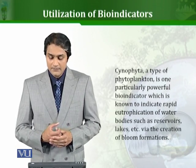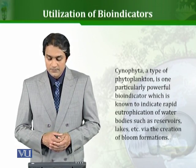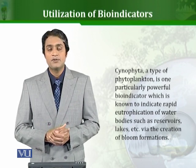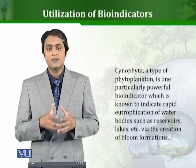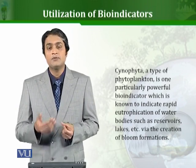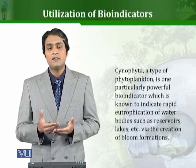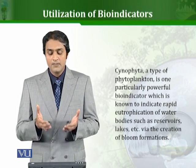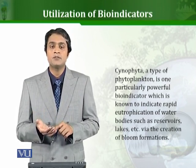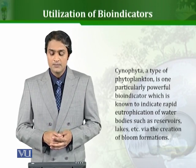For example, Cyanophyta, a type of phytoplankton, is one particularly powerful bio-indicator known to indicate rapid eutrophication of water bodies such as reservoirs and lakes via the creation of bloom formations. When there is eutrophication in a water body, this organism, Cyanophyta, creates blooms — it grows extensively in bloom form — which indicates that eutrophication is happening. So we can see that different types of living organisms act differently in different types of environments according to the changes happening there. We can utilize different organisms depending on what kind of environment and what kind of contaminant or change we want to study.